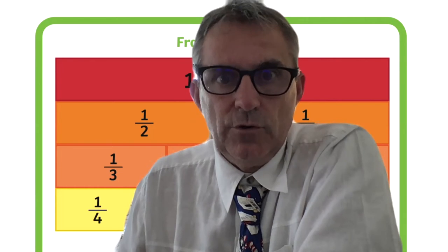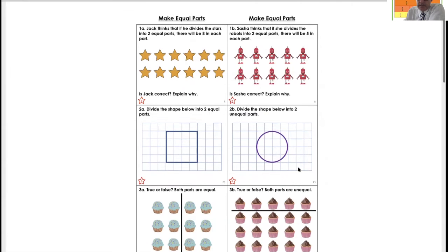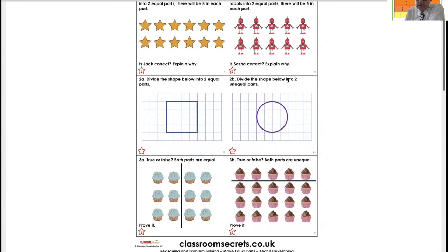Jack thinks if he divides these stars into two equal parts, there will be eight in each part. So let's do a line in the middle. One, two, three, four, five, six. One, two, three, four, five, six. Oh, he's not correct, is he? Because it would only be six.